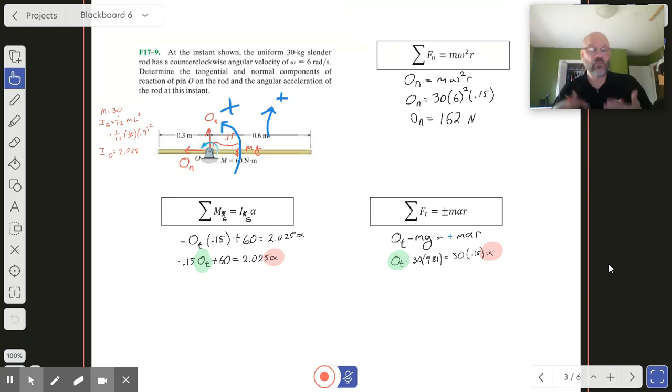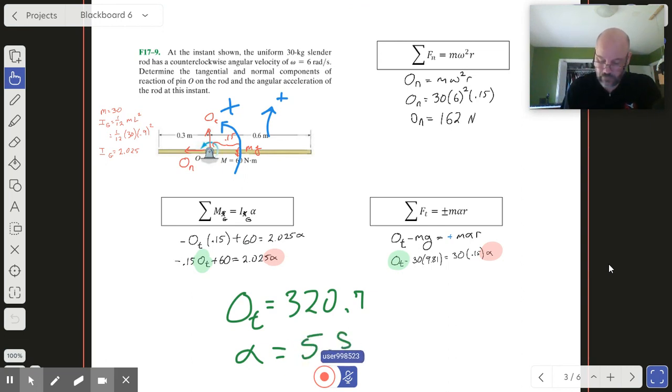I just put it into the calculator and cranked out the numbers. I got that Ot turned out to be 320.7 Newtons, and I would truncate that to three significant figures, so I'd call it 321 N. Then alpha turned out to be 5.87 rad/s².